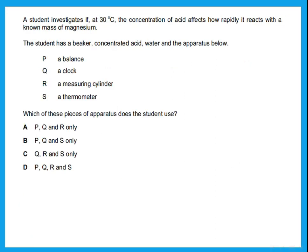Next question: a student investigates if at 30°C the concentration of acid affects how rapidly it reacts with a known mass of magnesium. The student has a beaker, concentrated acid, water, and apparatus below. At 30°C, he needs to measure temperature, so he needs a thermometer. For concentration of acid, he measures certain volumes of acid with certain volumes of water, so he needs a measuring cylinder.